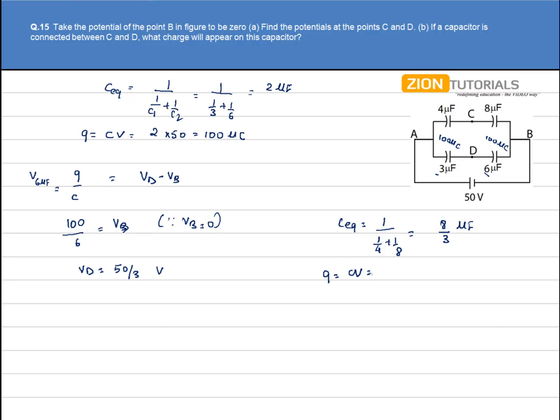Charge again Q is equal to CV comes out to be 8 by 3 into 50 that is 400 divided by 3 microCoulombs. We have to calculate the potential at point C. Potential drop across 8uF capacitor can be calculated by Q by C.